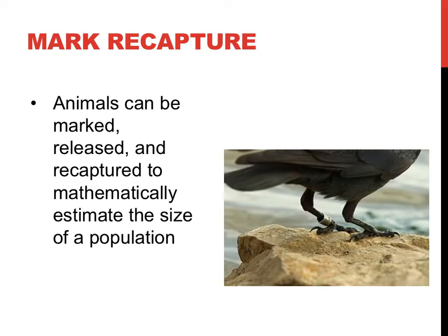To summarize how this works, a survey or sample of the population is captured. Next, the animals are marked in some way. In the past, I've used a permanent marker on the tail of a mouse, or a tag on the leg of a bird, as shown in this picture.